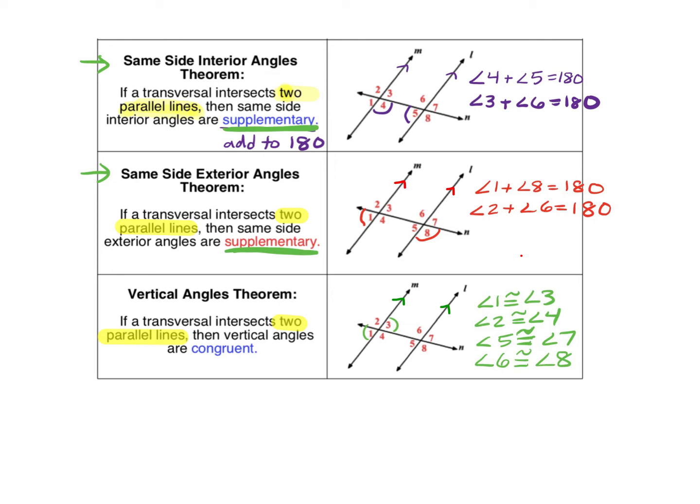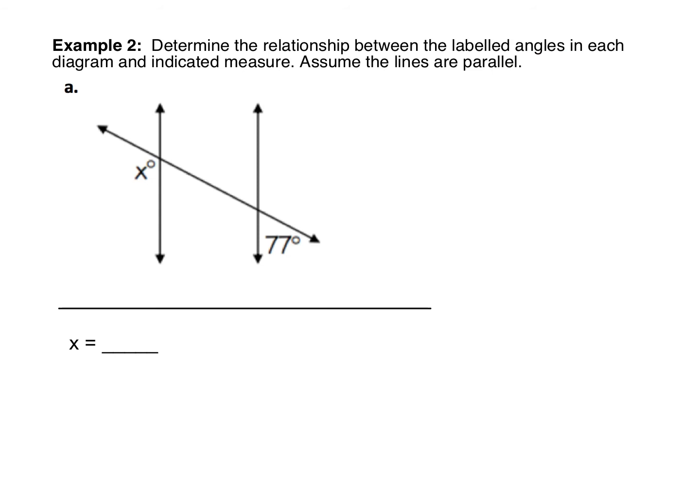Now that we've reviewed these important postulates and theorems, we're ready to solve some problems that involve using these relationships. In example two, we want to determine the relationship between the labeled angles in each diagram and find the indicated angle measure. Assume the lines are parallel, so we can apply those postulates and theorems. The first thing we need to do is figure out which type of angle pair is illustrated in the diagram.